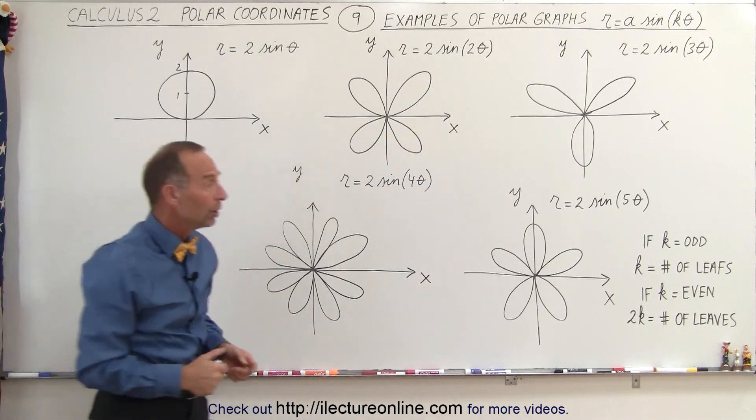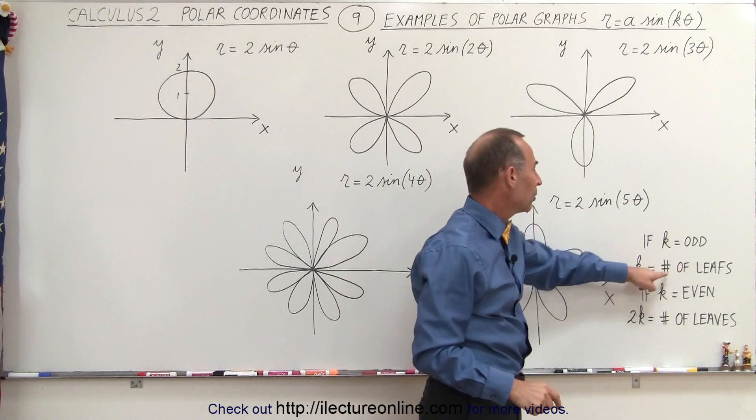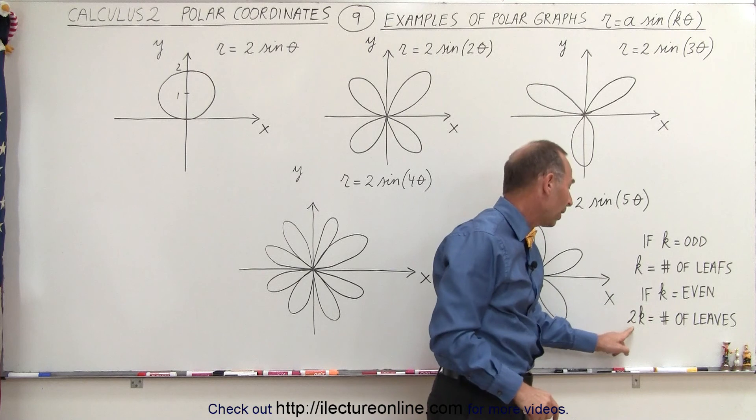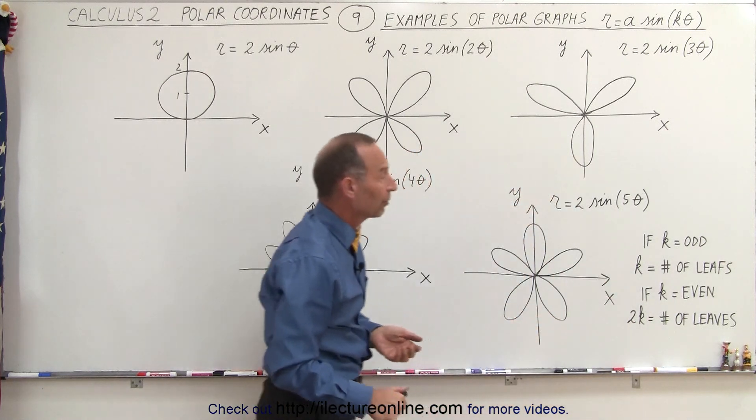So the general rule is that if k is an odd number, k equals the number of leaves. But if k is an even number, the number of leaves is twice the number of k, so it is double the number of leaves.